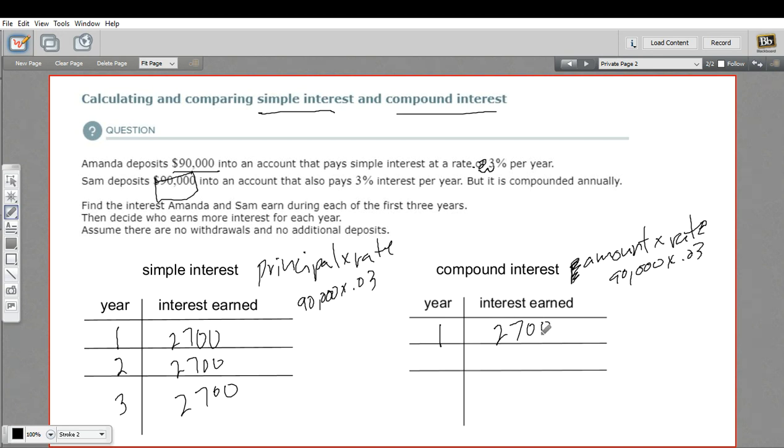Now that $2,700 gets added to the amount that's in the bank account. So our total now is 92,700. Our interest for year two is that times the rate. So that's going to be a little bit more. Let me pull up my calculator here, 92,700 times .03. So for year two, Sam earns $2,781, so $81 more in interest than Amanda earned.